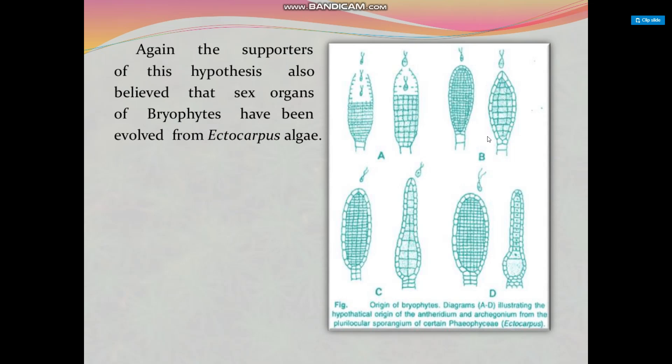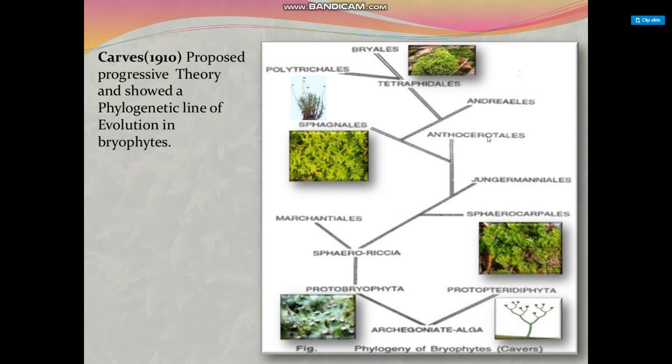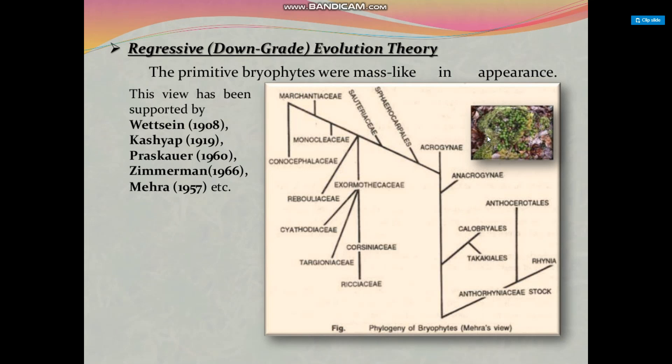There are two theories regarding evolution of bryophytes. The first is the upgrade or progressive evolution theory, and the second is the downgrade or regressive evolution theory. Progressive evolution means it starts with simpler forms and terminates in complex forms. Cavers, Campbell, and Smith supported this theory, which revealed the first evolved bryophyte was Sphaerocarpos, a hypothetical type. Cavers (1910) proposed the progressive theory and showed a phylogenetic line of evolution in bryophytes, as illustrated in this figure.